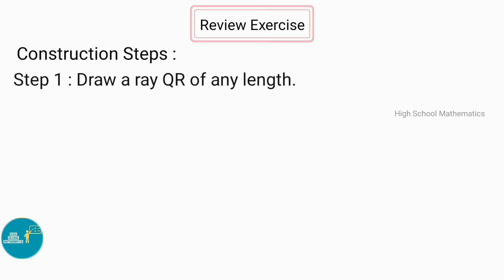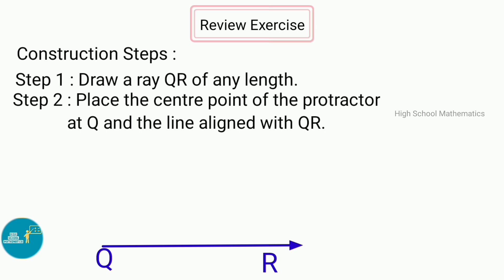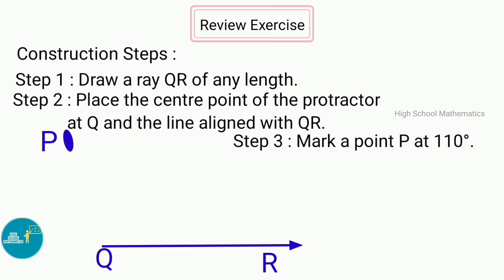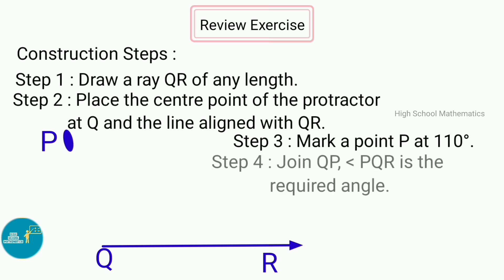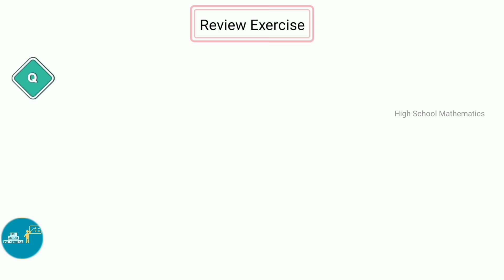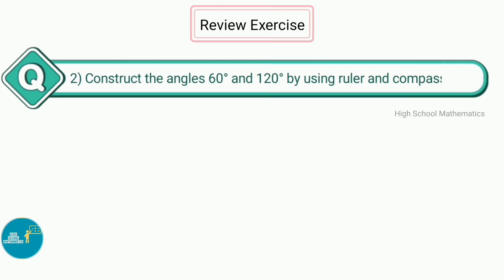Construction of 110 degrees: Step 1 — draw a ray QR of any length. Step 2 — place the center point of the protractor at Q and align the line with QR. Step 3 — mark a point P at 110 degrees. Step 4 — join QP. Angle PQR is the required angle of 110 degrees.